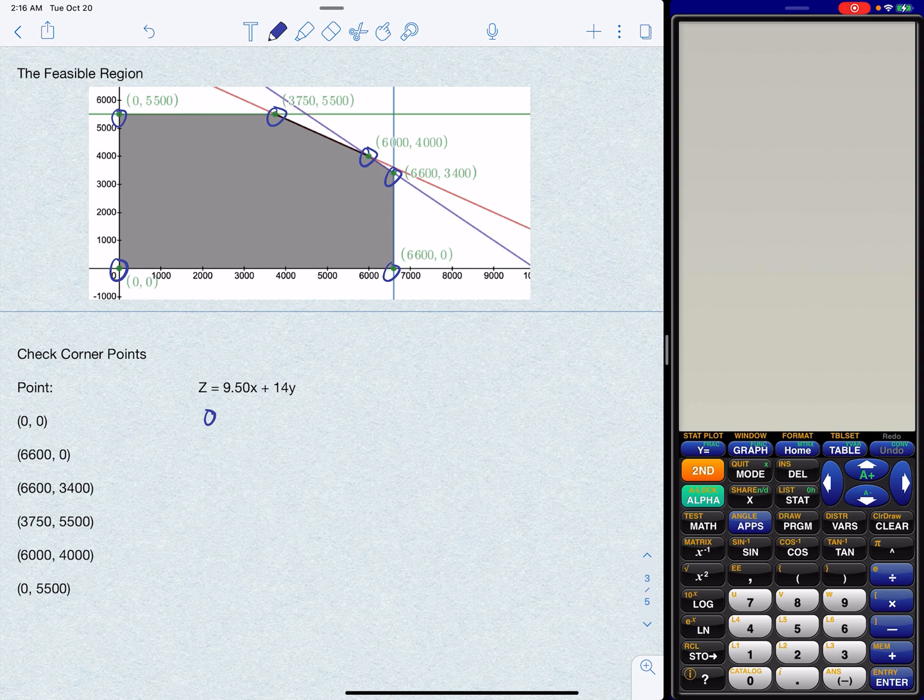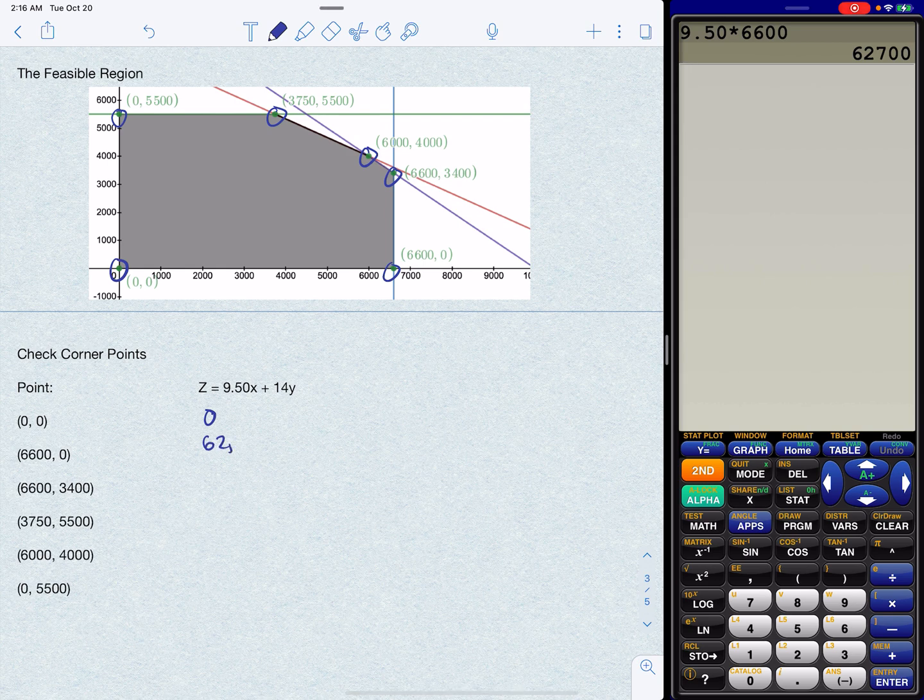6,600 comma 0. Well, yeah, I know I'm going to get a bigger profit out of that because I increased X. So this is telling me that this is 9.50 times 6,600. And then plus 14 times 0. So the profit at that level is 62,700. So we'll see what happens after we plug in some more corner points.